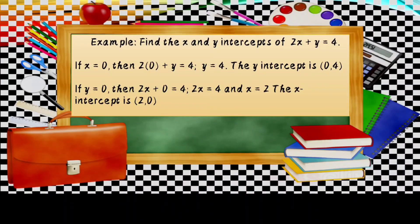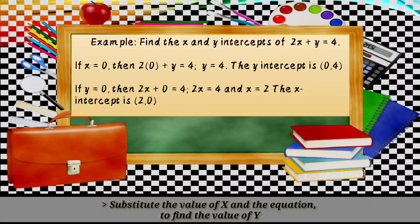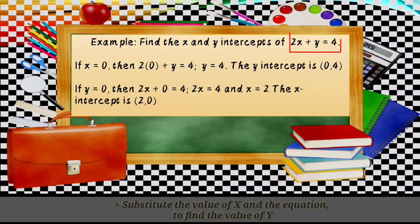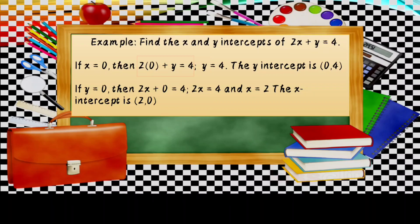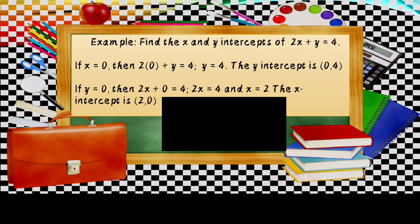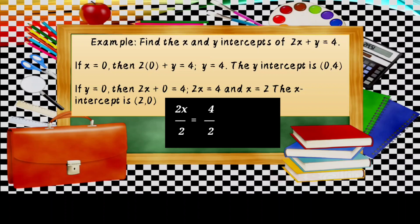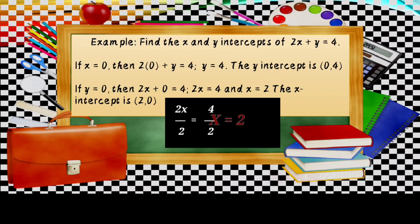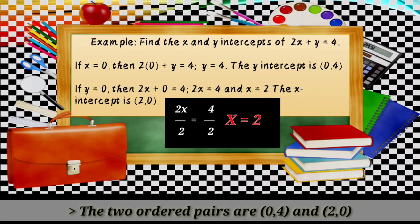Let us try this example: find the X and Y intercepts of 2X plus Y equals 4. If X equals 0, substitute into the equation: 2 times 0 plus Y equals 4, so Y equals 4. If Y equals 0, substitute into the equation: 2X plus 0 equals 4, so 2X equals 4. Dividing both sides by 2 gives X equals 2. The two ordered pairs are (0, 4) and (2, 0).